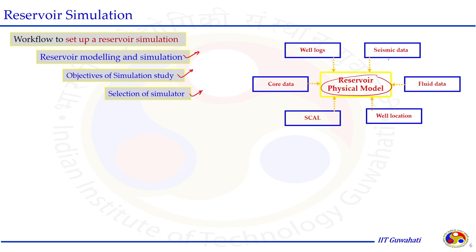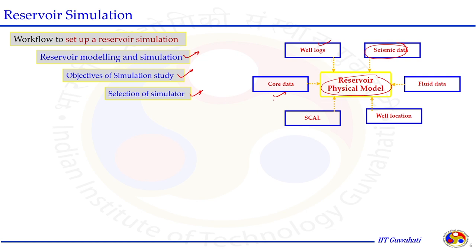The information required includes seismic data for the size of the reservoir domain, the geology of the reservoir domain, well log data, and core data for characterizing the rock. Special core analysis data in terms of saturation, porosity distribution, and permeability can also be included to develop the physical model. The first requirement is the dimension of the reservoir domain — whether it is a regular or irregular shape — and the XYZ dimensions, how porosity and permeability are distributed, and how phase saturation is present.